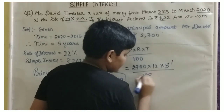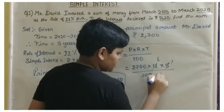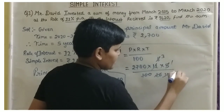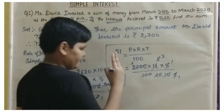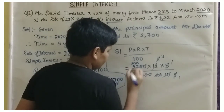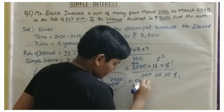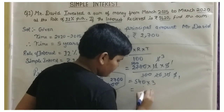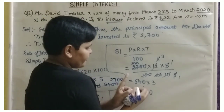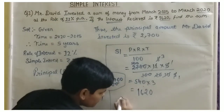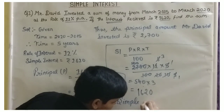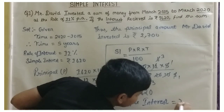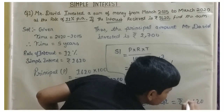Now let us sort out the multiplication: 2,700 into 12 into 5, divided by 100. Working through the multiplication steps, Simple Interest is equal to 1,620.